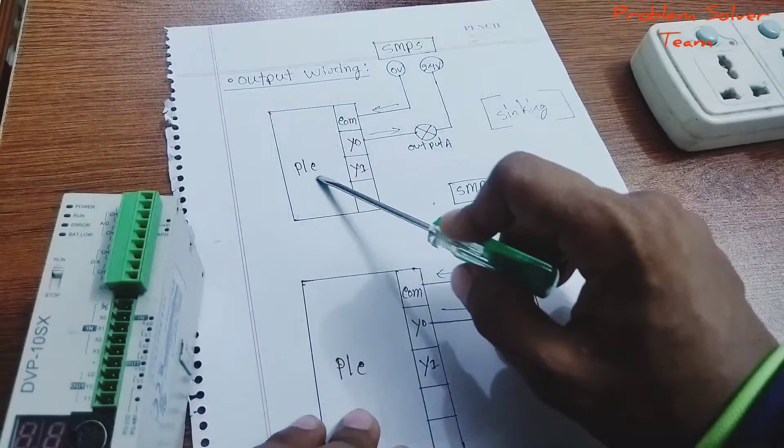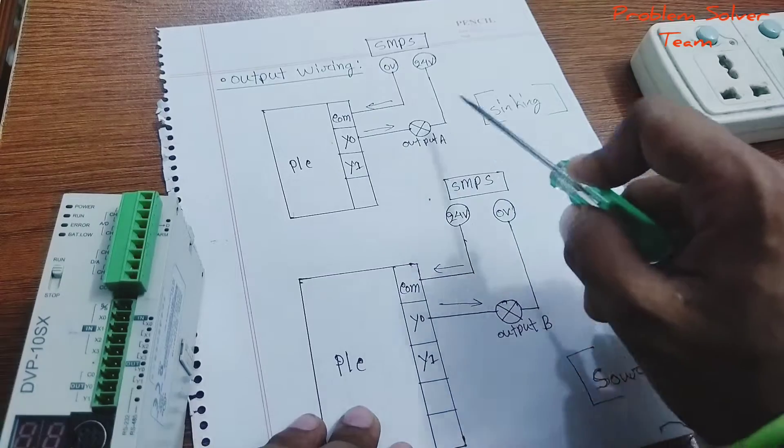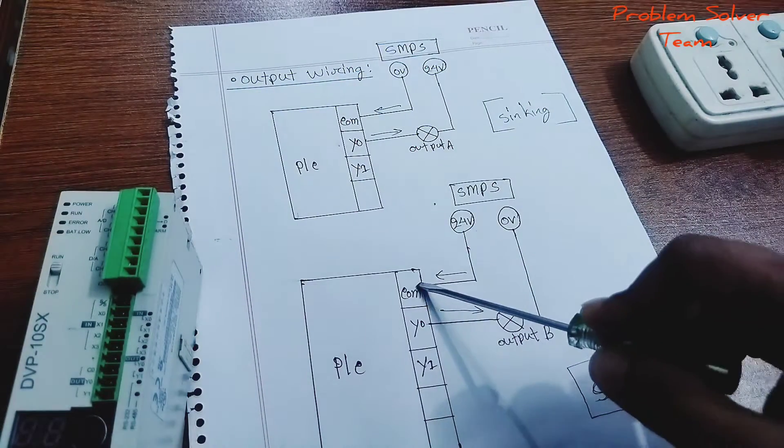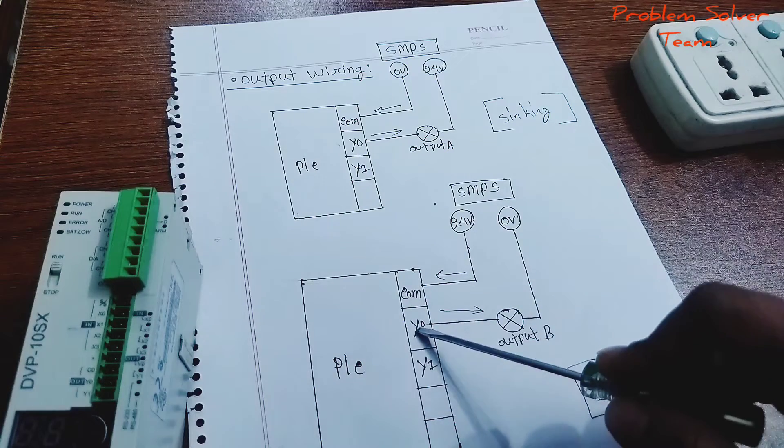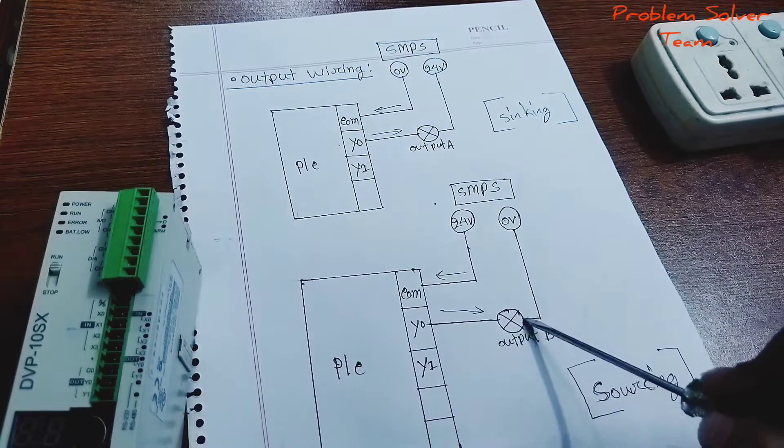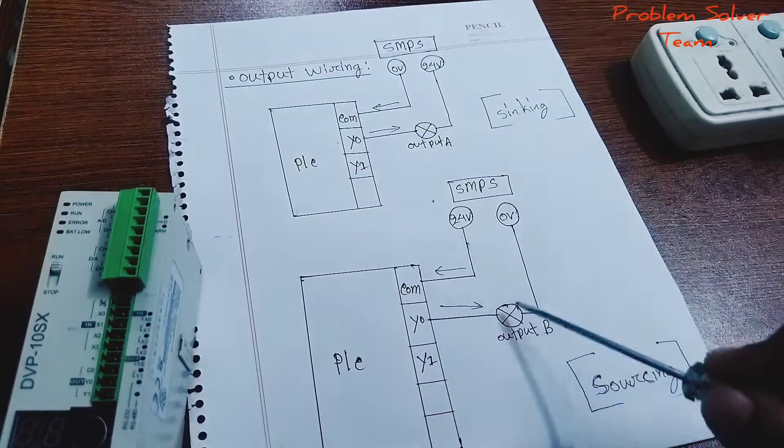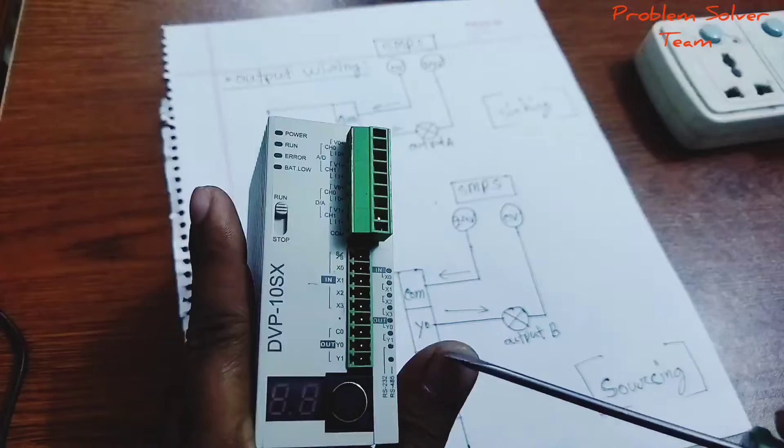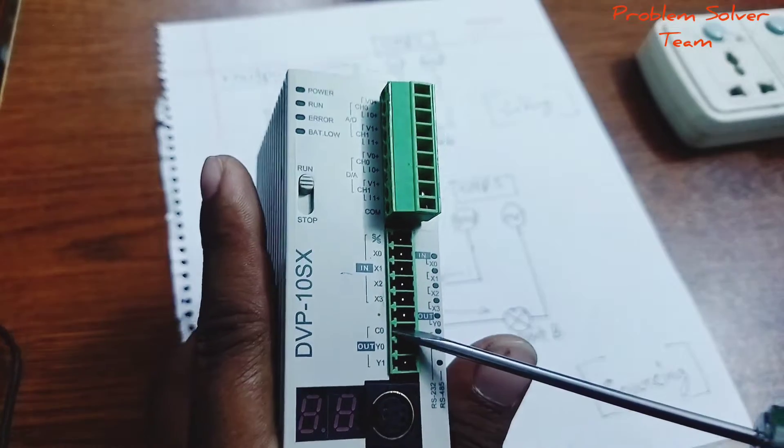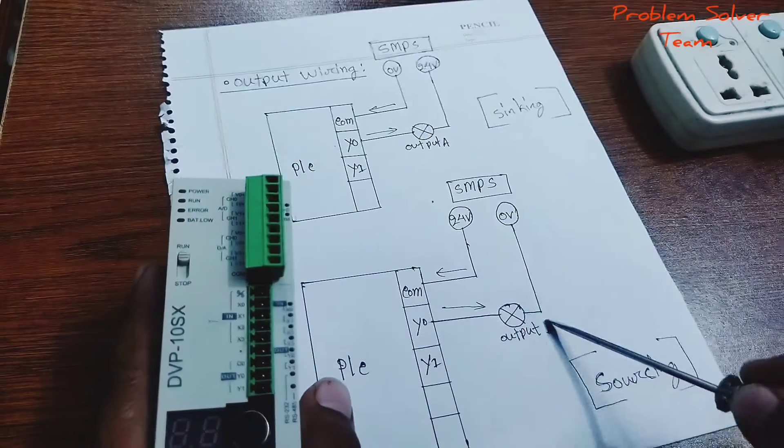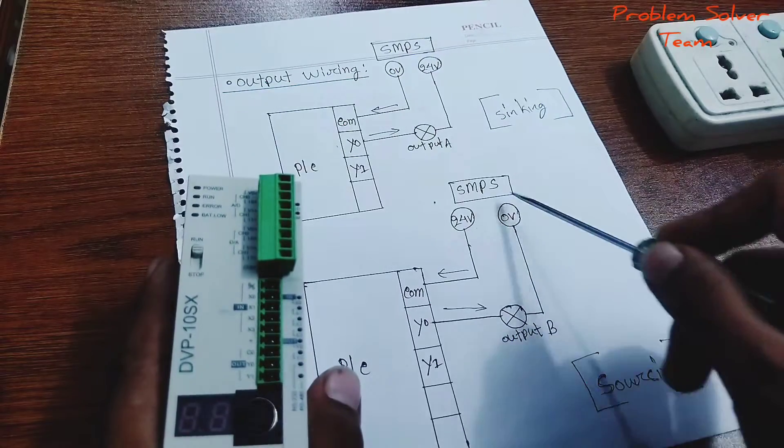Sourcing means PLC output section is sinking. Next topic: 24V incoming to common and Y0 connects to output B, then 0V to SMPS. This circuit has common at 24V and Y0 to load output B to 0V at SMPS.